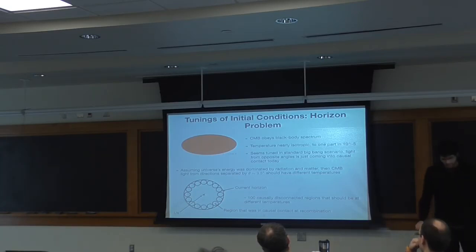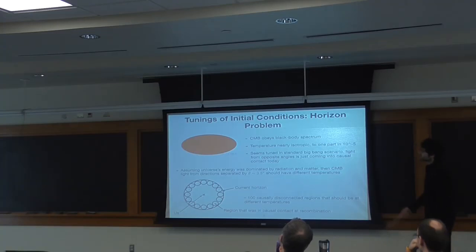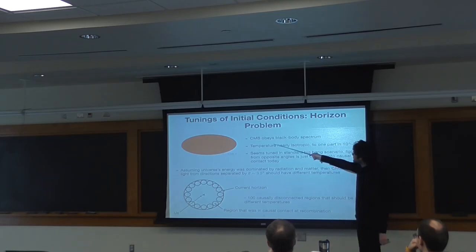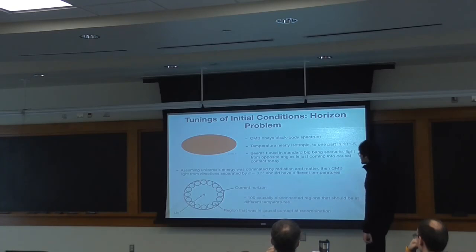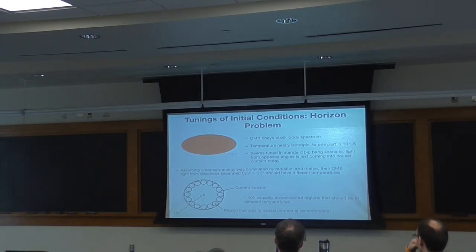Now, in spite of this success, the standard Big Bang picture seems to require a couple of fine-tunings of initial conditions, which are known as the Big Bang puzzles. And this is what will ultimately lead to the motivation for inflation. The first one is known as the horizon problem. As we all know, the cosmic microwave background obeys, to one part in 10 to the minus 5, a blackbody spectrum with an isotropic temperature of 2.7 Kelvin.